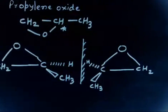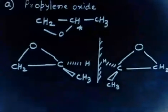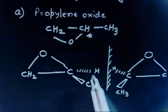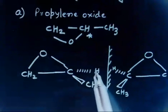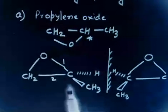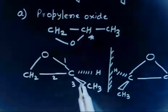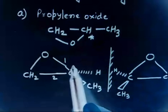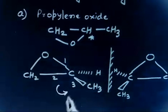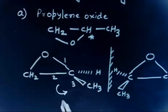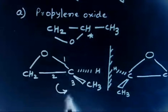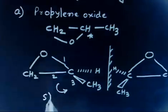If you want, you can also name each whether it is R or S. Hydrogen is on the back side — I purposely wrote hydrogen on the back side. Going one, two, three, this is anti-clockwise, so this configuration is S.